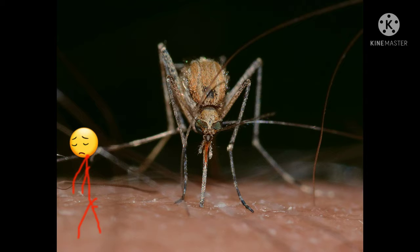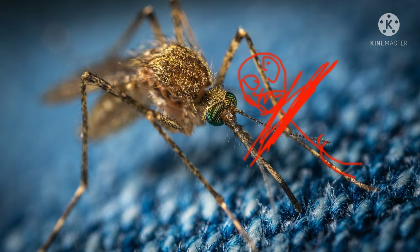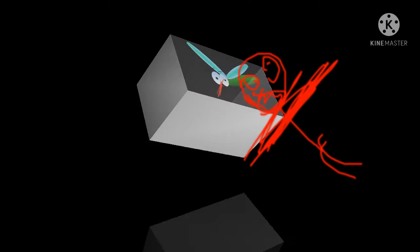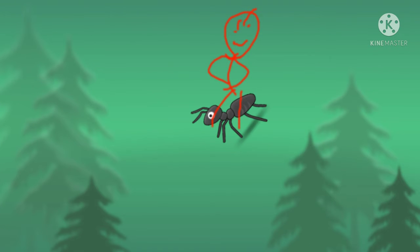Mosquitoes have a slender, segmented body, one pair of wings, one pair of halters, three pairs of long hair-like legs, and elongated mouthparts. The mosquito life cycle consists of egg, larvae, pupa, and adult stages.